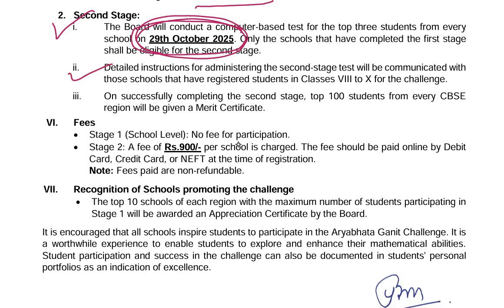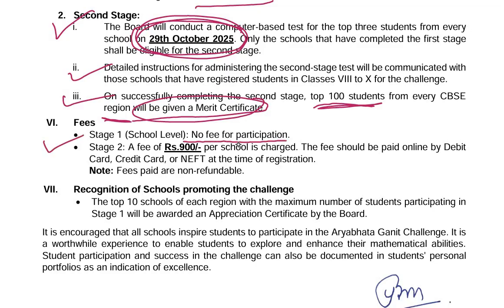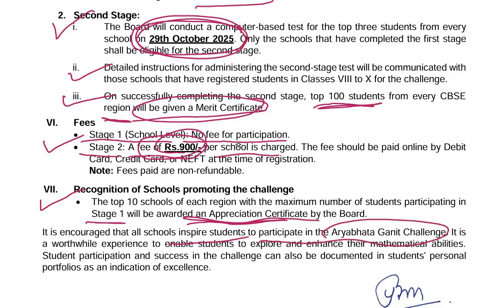Detailed instructions for the second stage test will be communicated to those schools only. On successfully completing the second stage, top 100 students from every CBSE region will be given a merit certificate. There is no fee for participation in Stage 1, and for Stage 2, a fee of Rs. 900 per school will be charged. The top 10 schools of each region with the maximum number of students participating in Stage 1 will be awarded an appreciation certificate by the board. CBSE has requested all the schools to inspire the students to participate in Aryabhat Ganit Challenge.